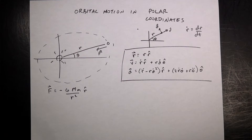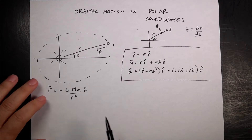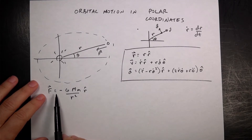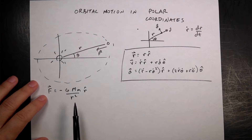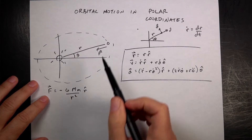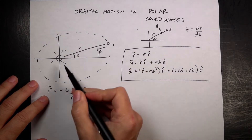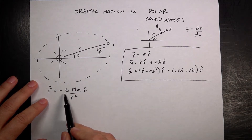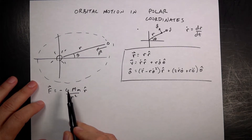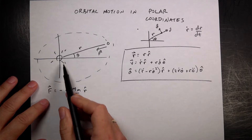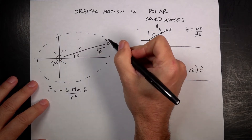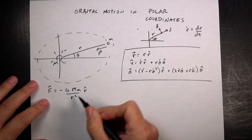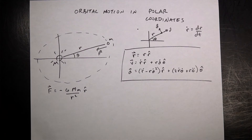The gravitational force is directed toward the origin, so it's in the negative r-hat direction. It equals −G · M · m / r², where M is the mass of the star and m is the mass of the planet. There is no force in the theta-hat direction.